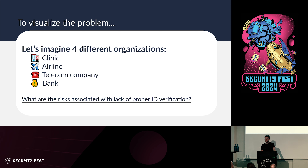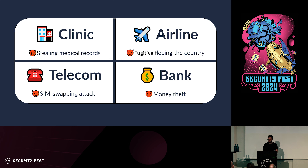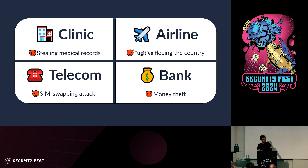Let's imagine four different organizations with different risk profiles and ask what risks come from improper ID verification. For a clinic, an attacker could steal someone's medical records. For an airline, a fugitive could flee the country. For a telecom company, you get the classic SIM-swapping attack — creating a copy of someone's SIM to obtain two-factor authentication codes via SMS. And for a bank, you could simply go and withdraw all of someone's money.